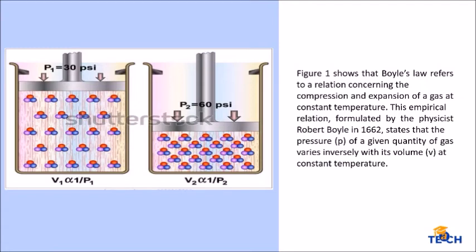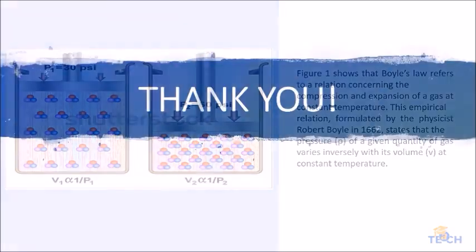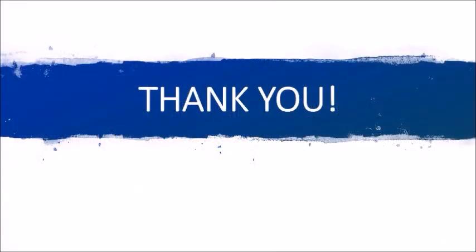In his findings, he expressed the volume readings in cubic inches and the pressure in inches of mercury. He then proposed Boyle's Law, which states that the volume of a given mass of gas held at constant temperature is inversely proportional to its pressure.